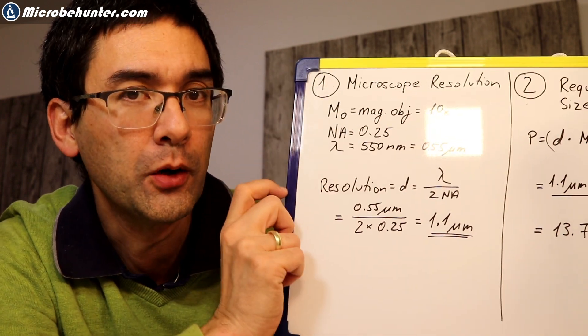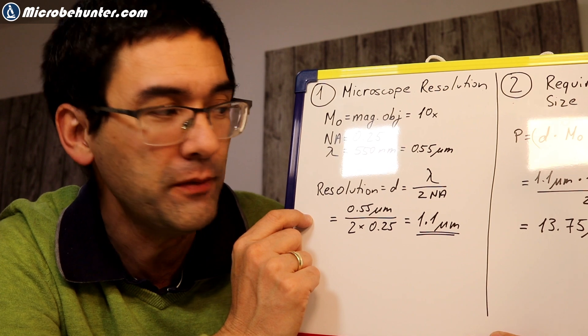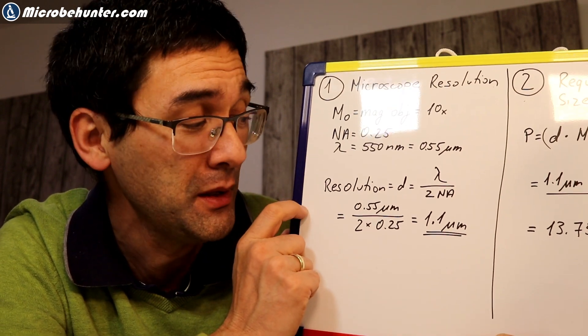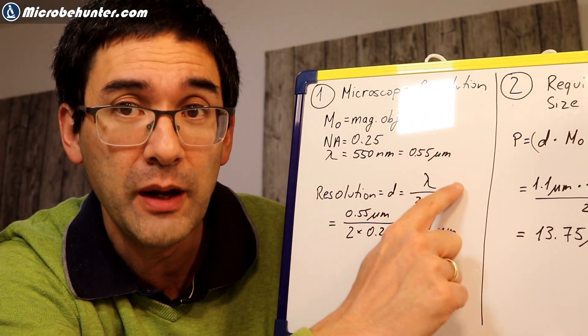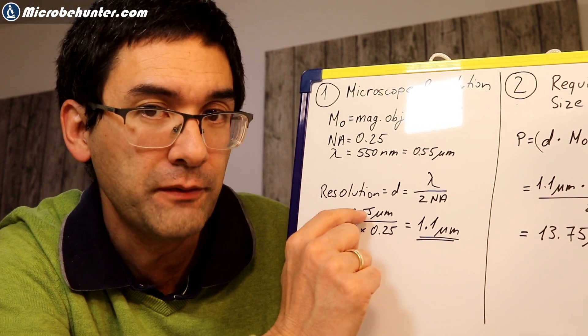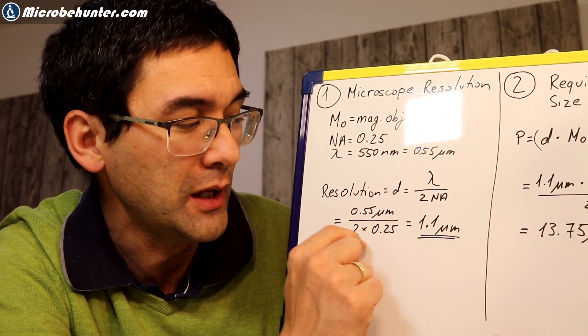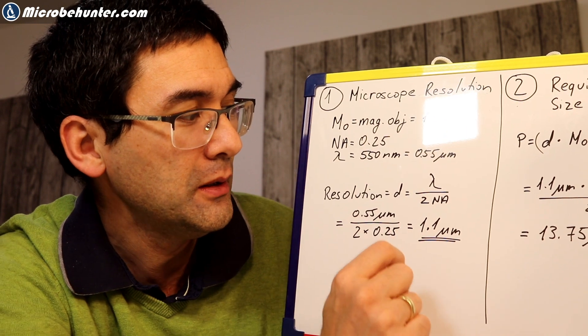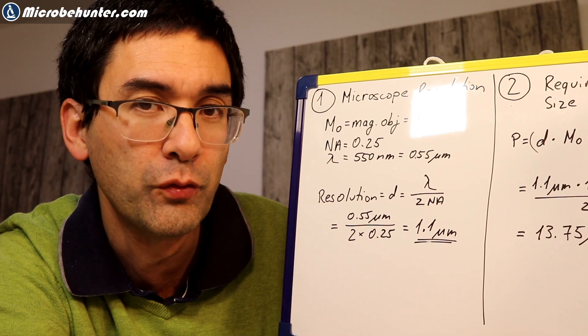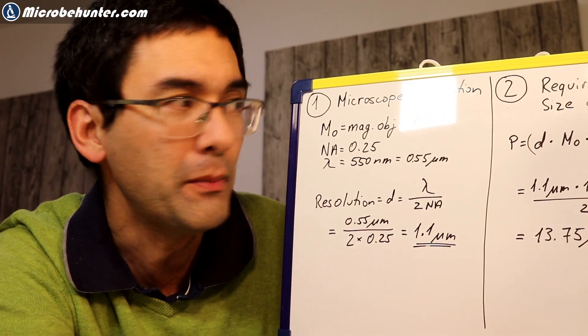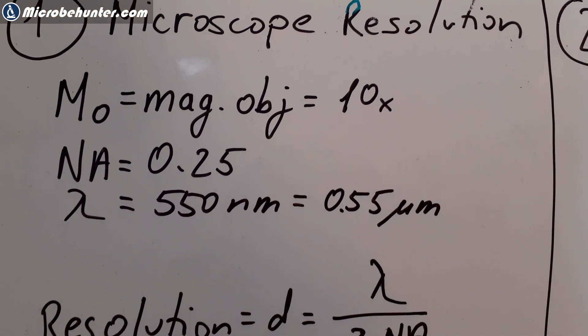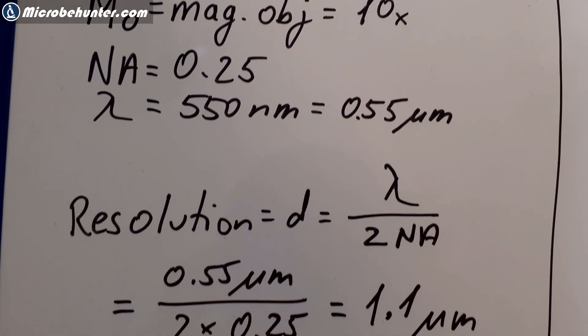So this is just an estimate here. And what we're going to do now is we're going to plug it into this formula, this famous formula, and I already made a separate video on this already. And so the resolution is lambda, the wavelength, divided by two times the numerical aperture. And you plug in the value 0.55 micrometers divided by two times 0.25, and you get a resolution of 1.1 micrometers. So my objective is able to resolve 1.1 micrometers. That's approximately the size of bacteria.